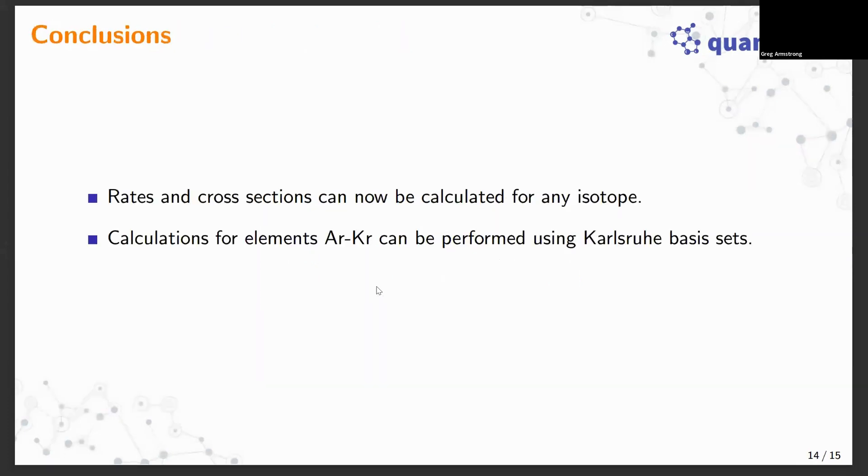To conclude, rates and cross sections can now be calculated in QEC for any isotope that the user chooses, and calculations can be carried out if you have elements between argon and krypton using Karlsruhe basis sets. What I'll try to do now is demonstrate how this is actually done in QEC.